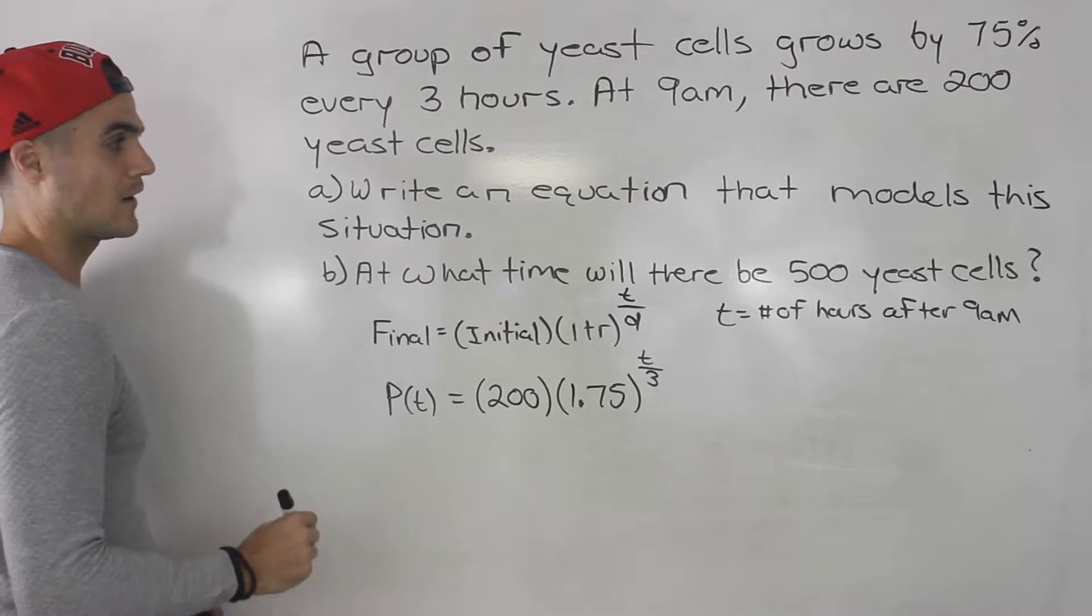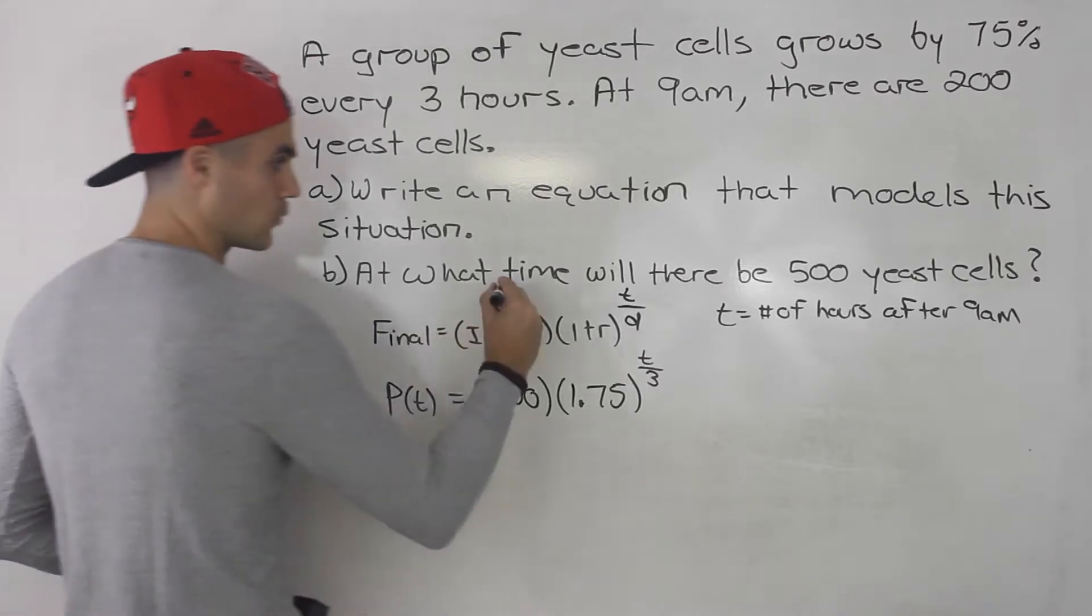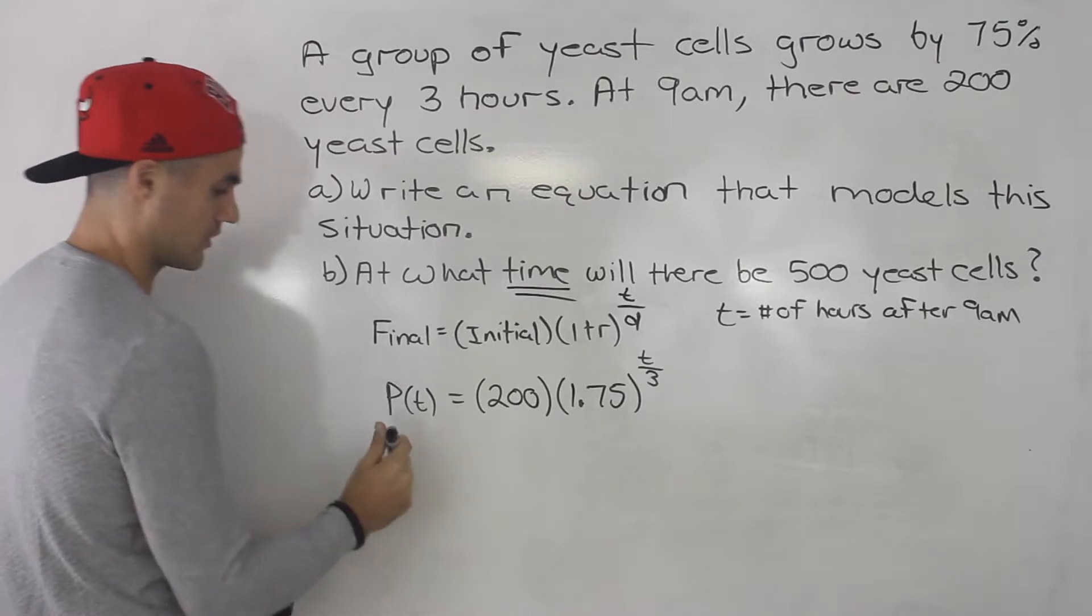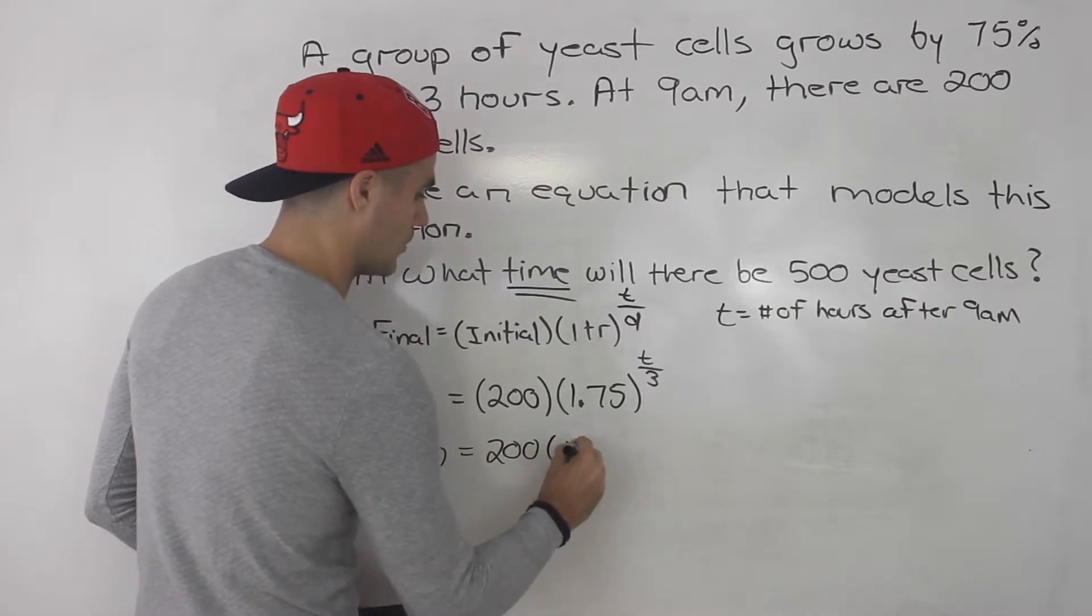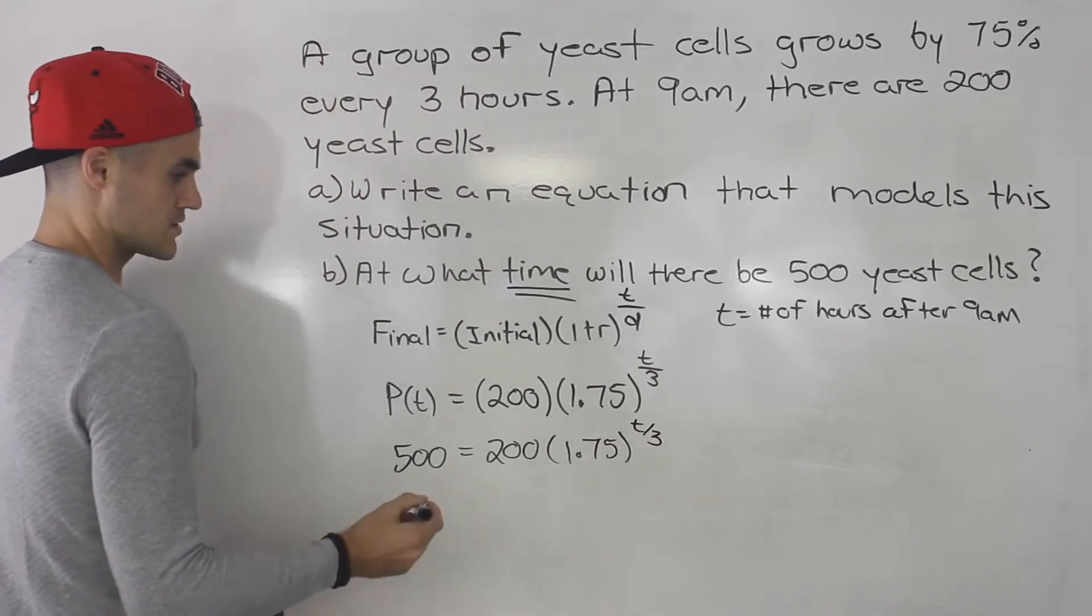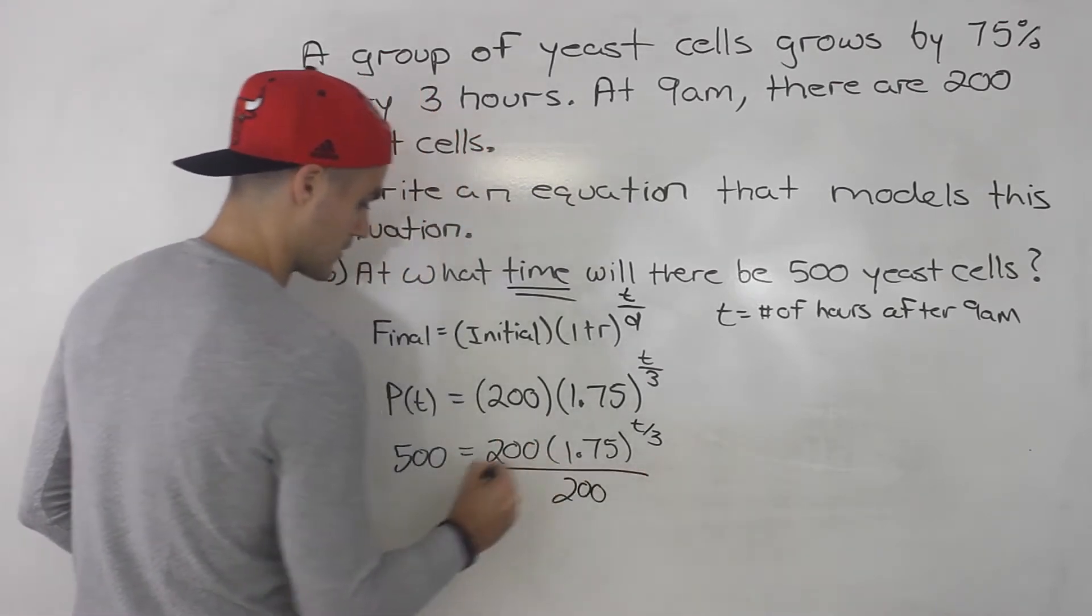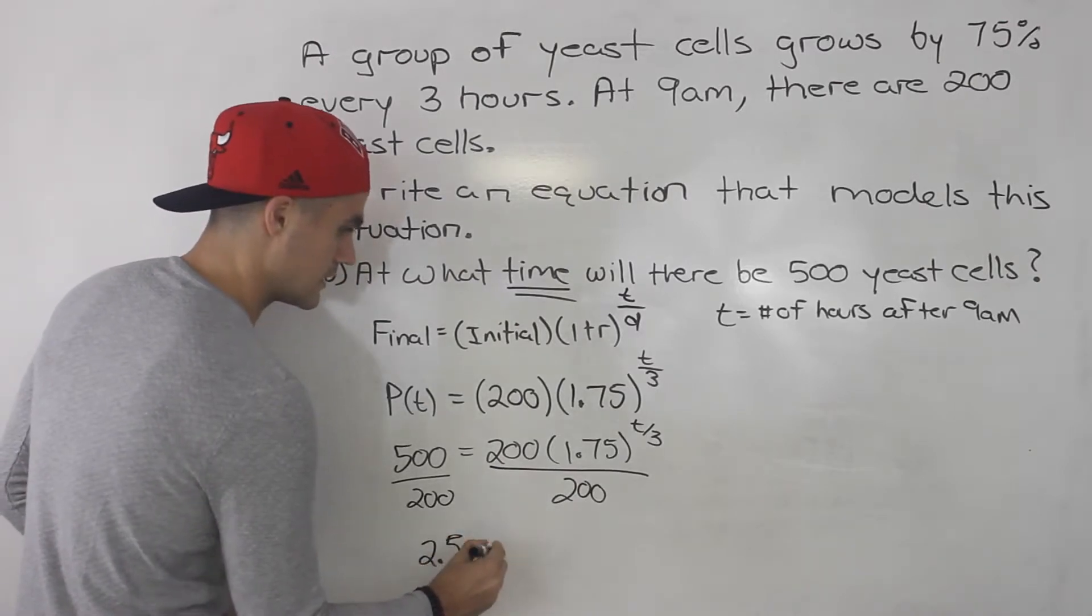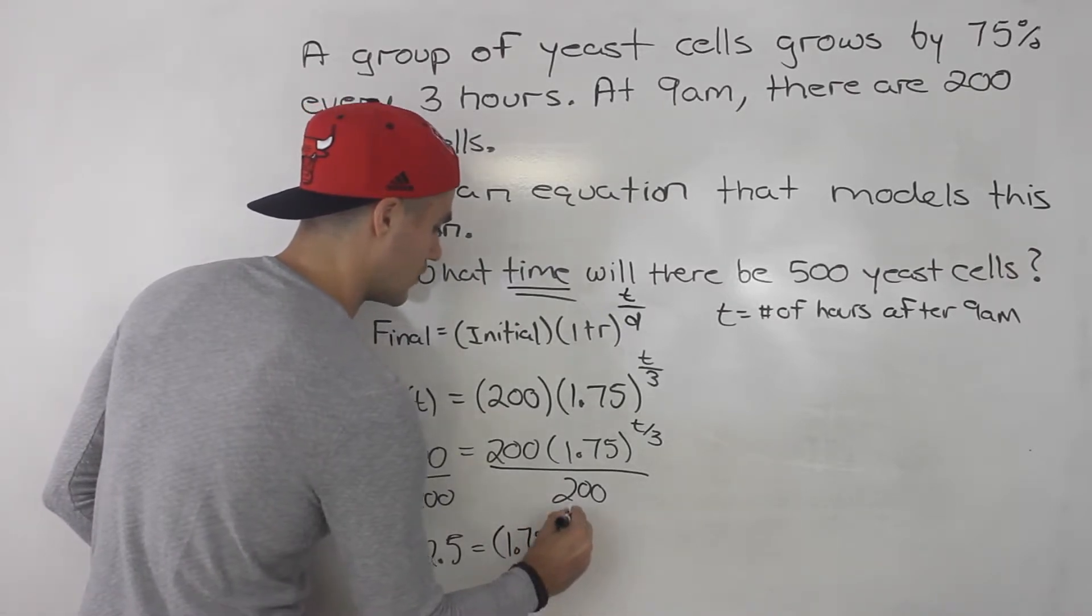For part b they're asking at what time will there be 500 yeast cells. Notice we're solving for time, so we're going to solve for the t variable. The 500 we input on the left side for the final amount. So 500 equals 200 times 1.75 to the power of t over 3. From here we divide both sides by 200, so we'll have 2.5 equals 1.75 to the power of t over 3.